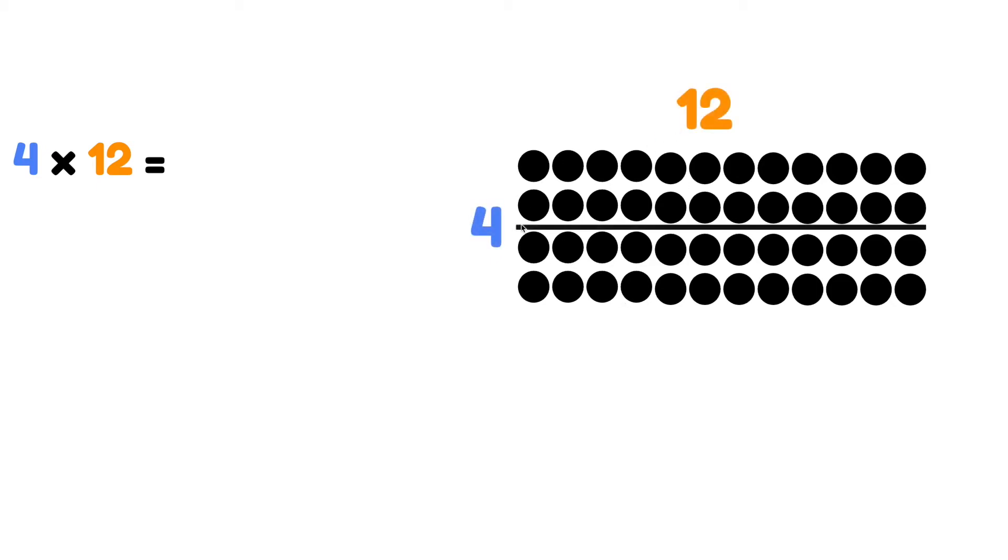Now, what if we cut this array in half? We have 2 rows on top plus 2 more rows below, which will make 4. So instead of writing 4 times 12, we can say 2 plus 2. So 2 rows plus 2 rows times 12 because each row has 12.